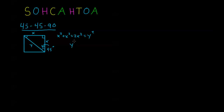Solving for Y, we take the square root of both sides: Y equals the square root of 2 times X. We don't need plus-or-minus here because triangle sides must be positive. So in any 45-45-90 triangle, the hypotenuse is always square root of 2 times the shorter sides, and vice versa.